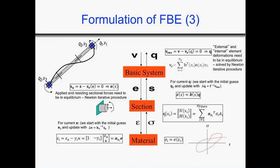The other advantage is that the force-based beam column element uses the exact interpolation function of forces, while the displacement-based element uses an assumed interpolation function of displacement along the element. Due to this starting point — exact in the case of force-based elements and approximate in the case of displacement beam column elements — we can achieve greater accuracy when using force-based elements, especially for local deformations such as curvature and strains.